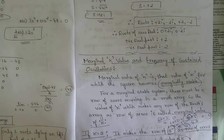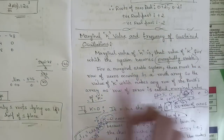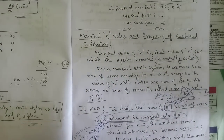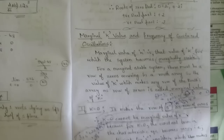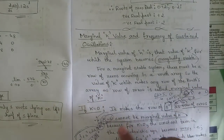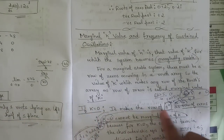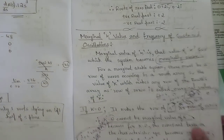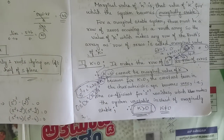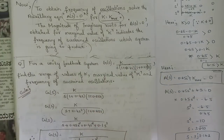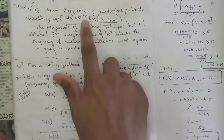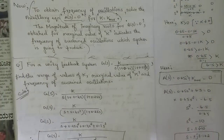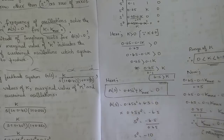The marginal value of K is the value at which the system becomes marginally stable. For a marginally stable system, there must be a row of zeros occurring in the Routh array — this is compulsory. Equate the term to zero to get the row of zeros. Note that if K equals zero it makes the s-power-zero row a row of zeros, so K equal to zero cannot be the marginal value; K must be strictly greater than zero. To find the frequency of sustained oscillations, solve the auxiliary equation A(s) = 0 at K equal to K-margin.